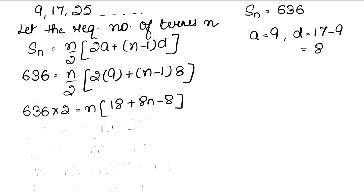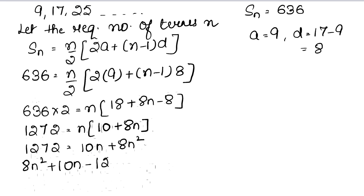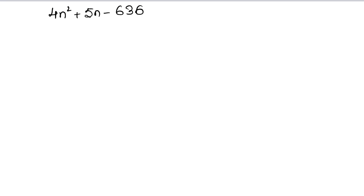636 times 2 = 1272। Equals to N into 18 plus 8N minus 8। 18 minus 8 = 10, so N into 10 plus 8N। Bracket खोला: 10N plus 8N square। 8N square plus 10N को left side से right side लाए, sign change हो गया। पूरी equation को 2 से divide किया: 4N square plus 5N minus 636 = 0।